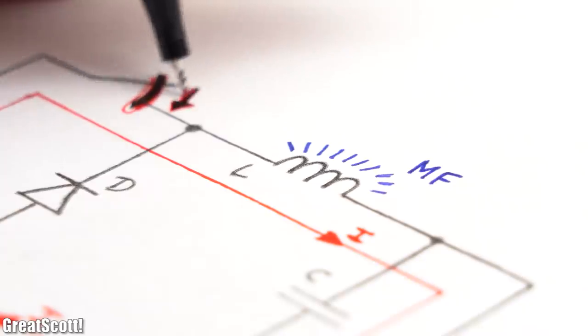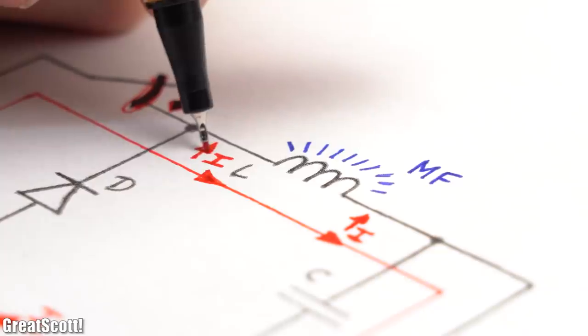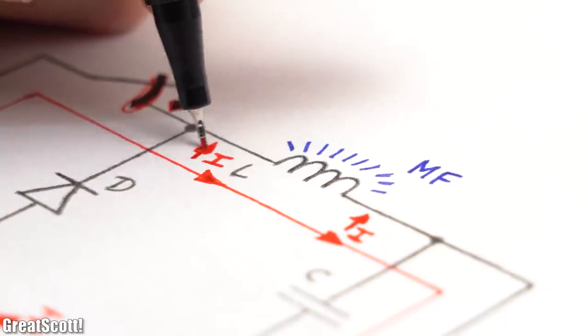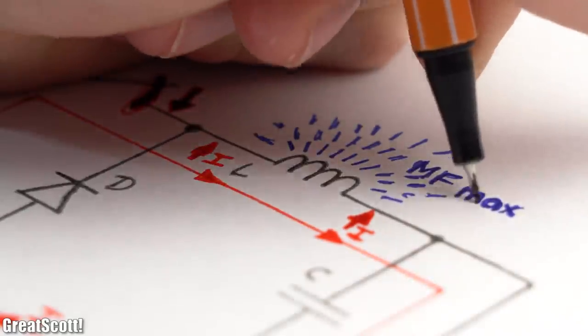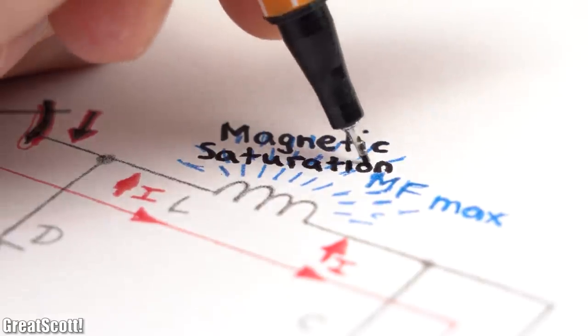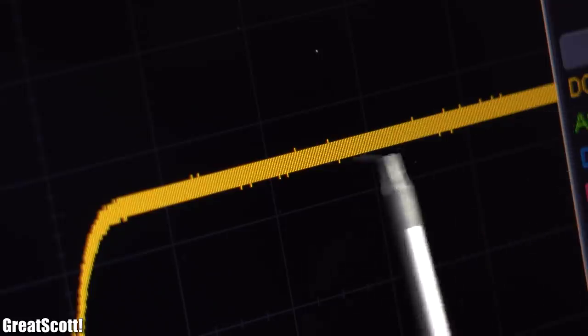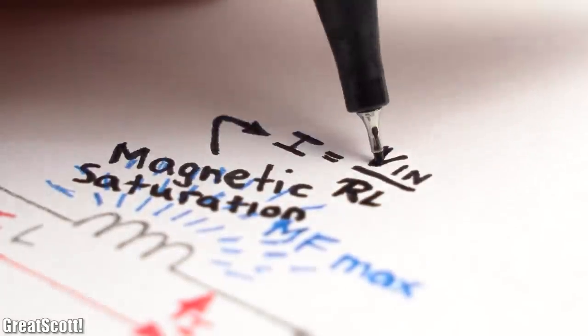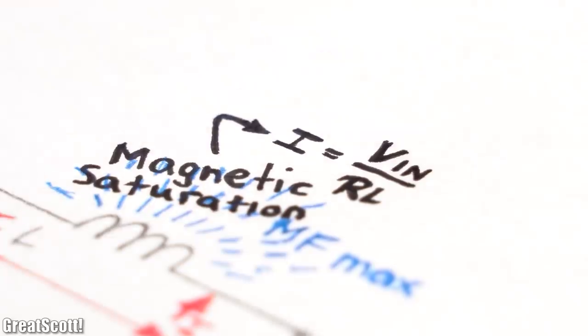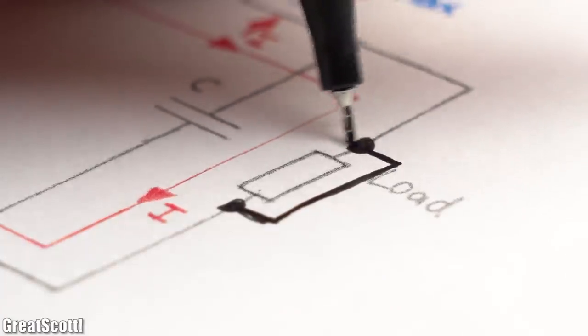Of course we cannot keep the switch closed forever because the stored energy of the coil in the form of the magnetic field will at some point reach its maximum. This state is called magnetic saturation in which a constant current flows that is only limited by the resistance of the windings of the coil.